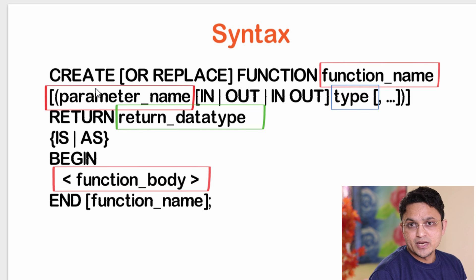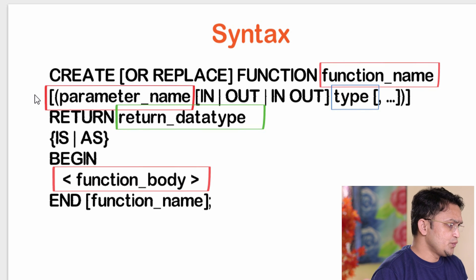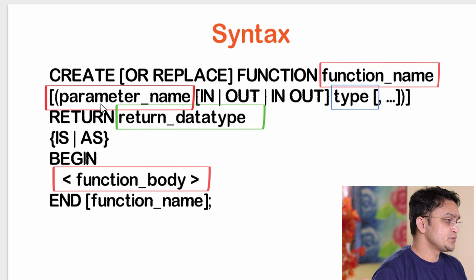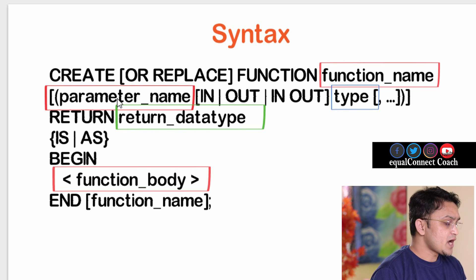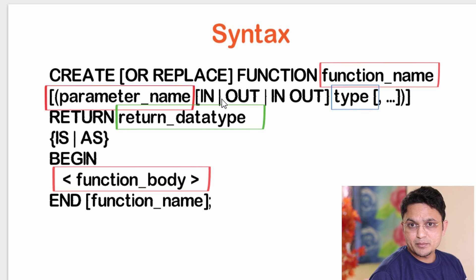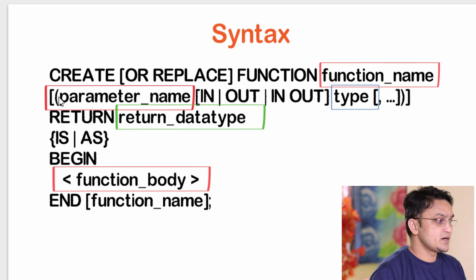After the function name, if you want to pass some input, output, or IN OUT parameter, you can define that parameter for the function. The second line handles this — it is optional, as indicated by the square brackets. If you want to pass parameters, you use opening and closing parentheses, then give the parameter name, specify whether it is an IN, OUT, or IN OUT parameter, and then provide the data type for that variable.